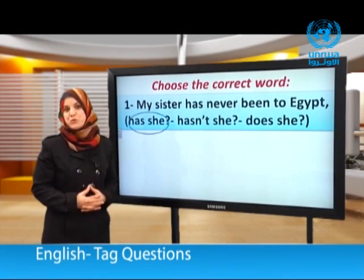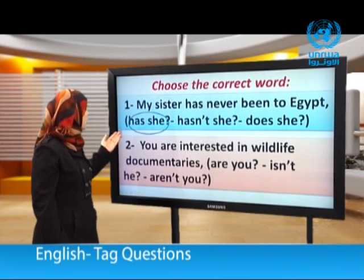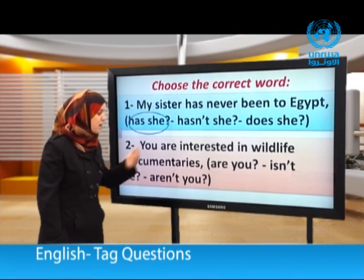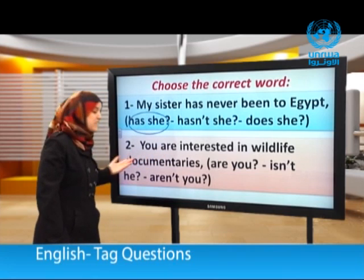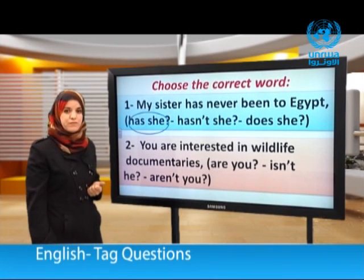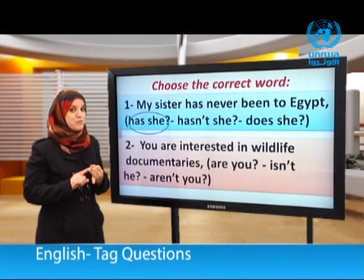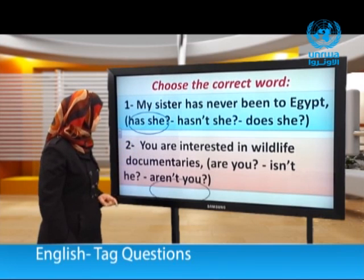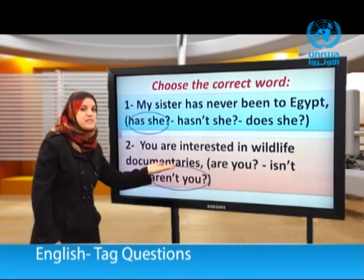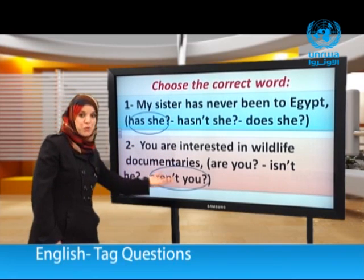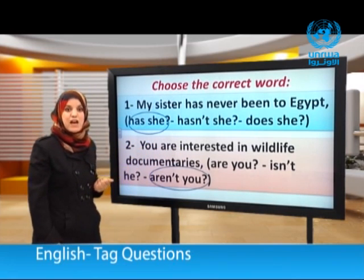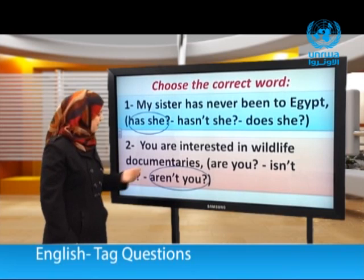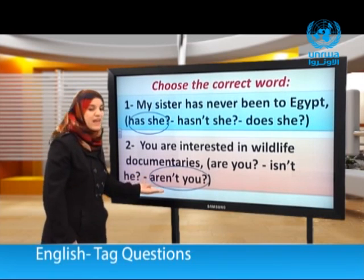Number two: You are interested in wildlife documentaries — are you? Isn't he? Or aren't you? We need a helping verb and a subject pronoun. The sentence is positive so we need a negative tag question. The correct answer is: aren't you? So: You are interested in wildlife documentaries, aren't you?